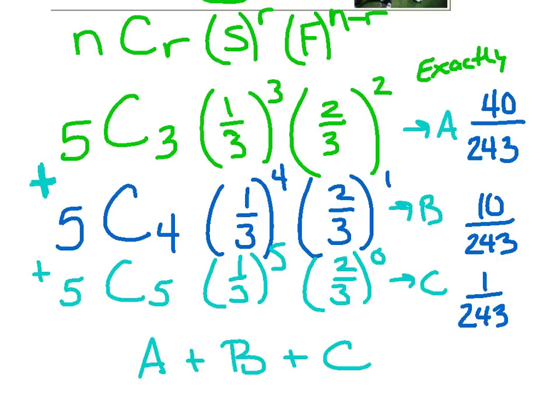You'll see I wrote my probabilities off to the side here. I had 40 over 243, 10 over 243, and 1 over 243. I stored those into A, B, and C. And when I add them together, I get a total of 51 over 243.